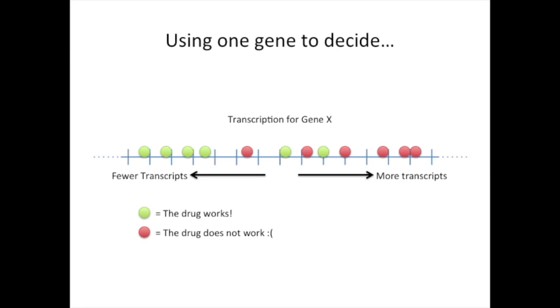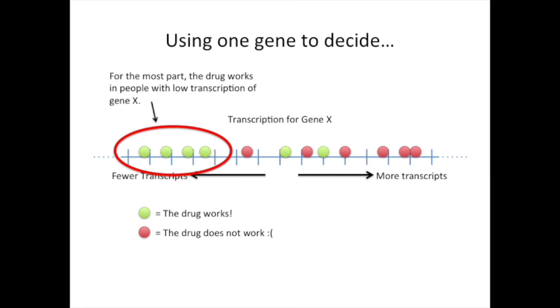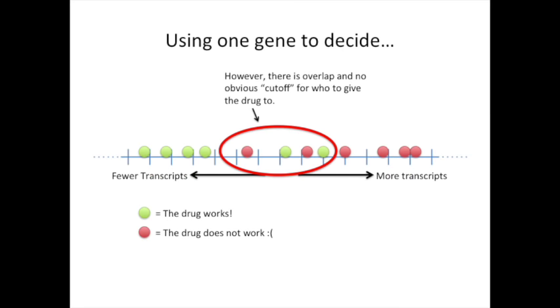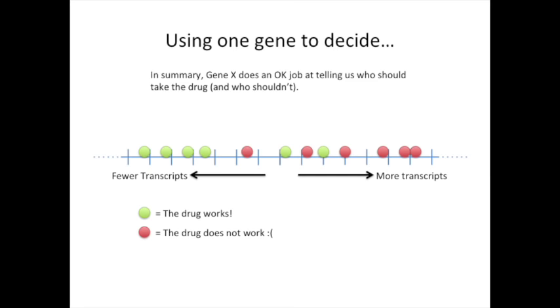Here's an example using one gene to decide who gets the drug and who doesn't. We've got a number line, and on the left side we've got fewer transcripts, and on the right side we've got more transcripts. The dots represent individual people. The green dots are people who the drug works for. The red dots represent people whom the drug just makes them feel worse. We can see that for the most part the drug works for people with low transcription of gene X, and for the most part the drug does not work for people with high transcription of gene X. In the middle we see that there's overlap, and that there's no obvious cutoff for who to give the drug to. In summary, gene X does an okay job at telling us who should take the drug and who shouldn't. Can we do better?